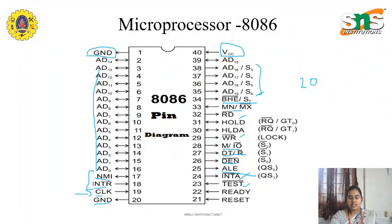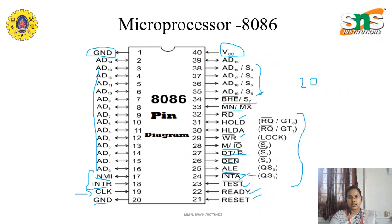We also have the TEST pin to test the interrupts and other signals. We have READY and RESET. RESET is to reset the IC, and READY is from the external device to the IC, acknowledging it is ready for receiving and transmitting the data. Apart from that, we have the other timing and control signals. T0 and D1 are for the timing, and S0, S1 are for the state indicators. In the next lecture, we will discuss about the interrupts of 8086. Thank you.